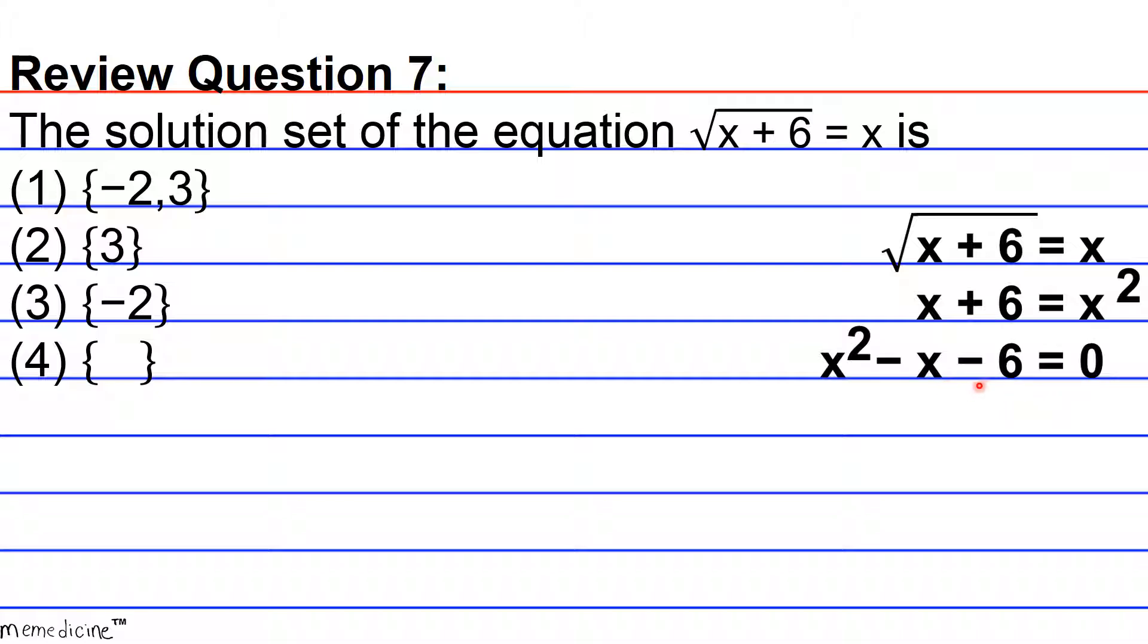So we find two numbers that we multiply to get our constant and two numbers that we add to get the coefficient of the B term. So we said x plus 2 and x minus 3 and that's going to be equivalent to 0.